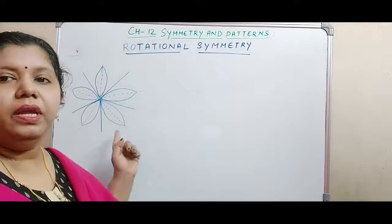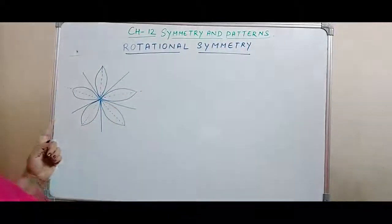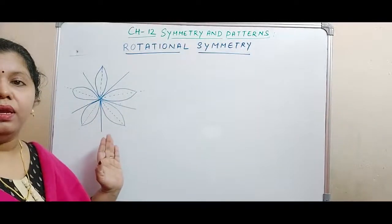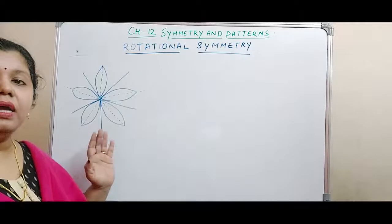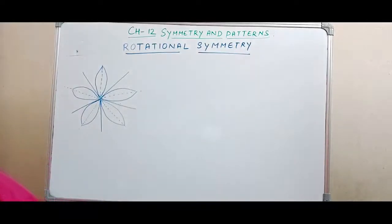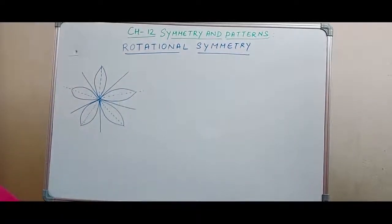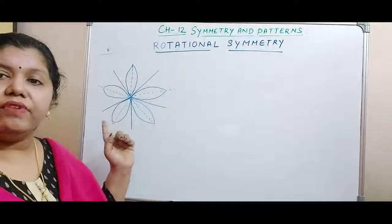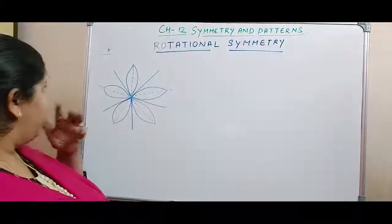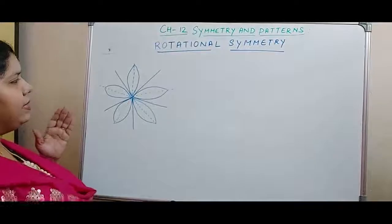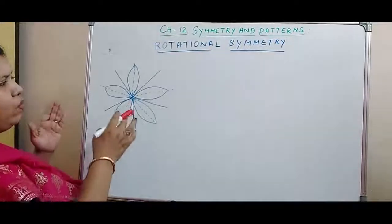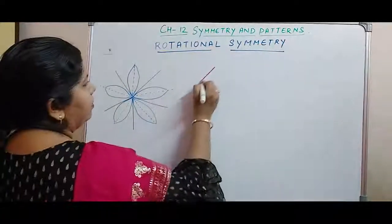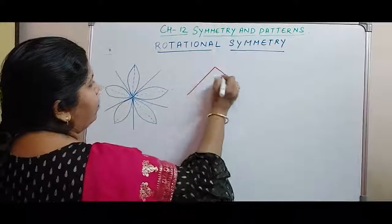Now look at this particular figure. How does this figure look? The figure looks like a flower. And this flower has got 5 petals. So you can see that this flower shape looks like a regular pentagon.